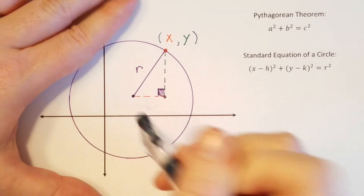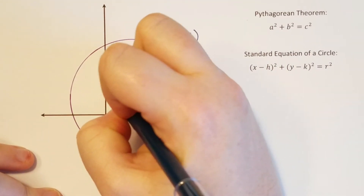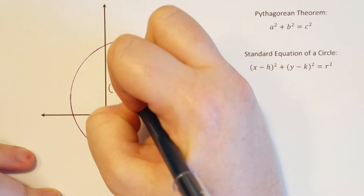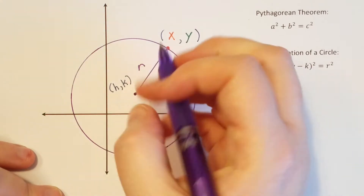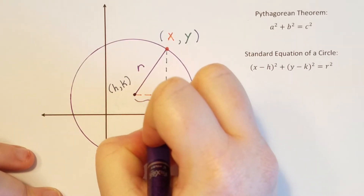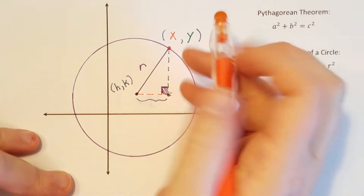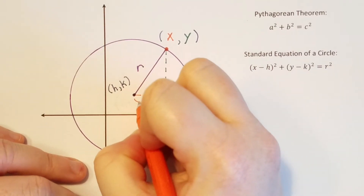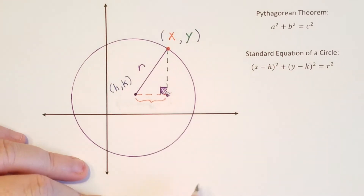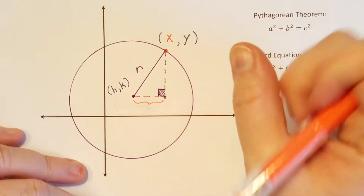Let's call it h,k — that's the center point right there. So what is this distance right here? This distance, we typically call 'a' when we're talking about the Pythagorean theorem.